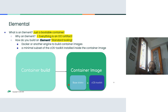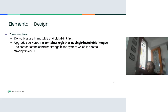Everything is an OCI artifact in Elemental — from the packages included inside the container to the container itself, which is delivered as a medium for upgrades. How do you actually build an element? You do that with standard tooling, with the tools you are already familiar with when working with containers, such as Docker or other engines. The only requirement is that the COS toolkit is installed inside the container image.